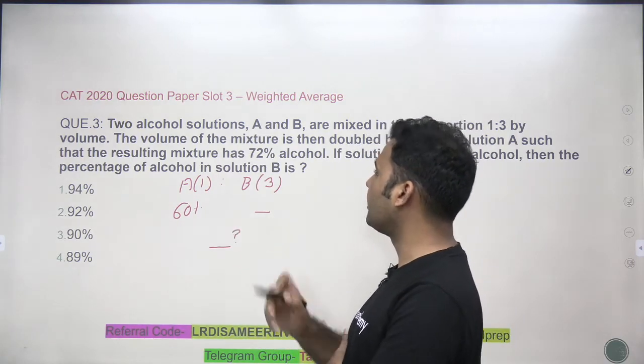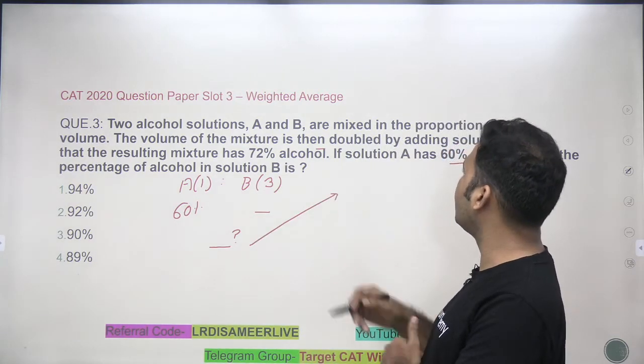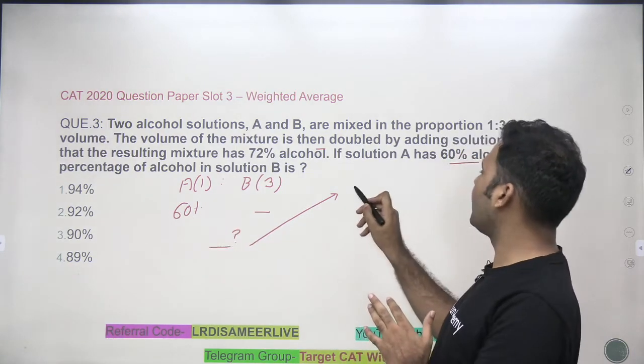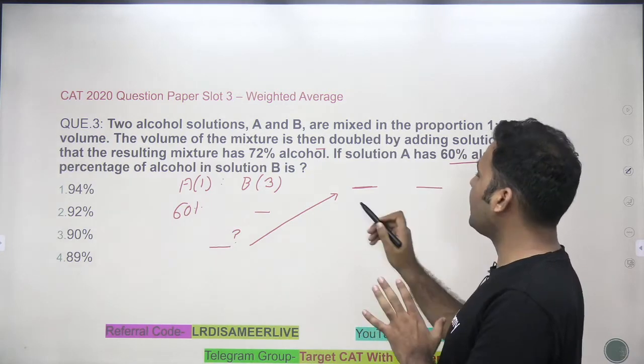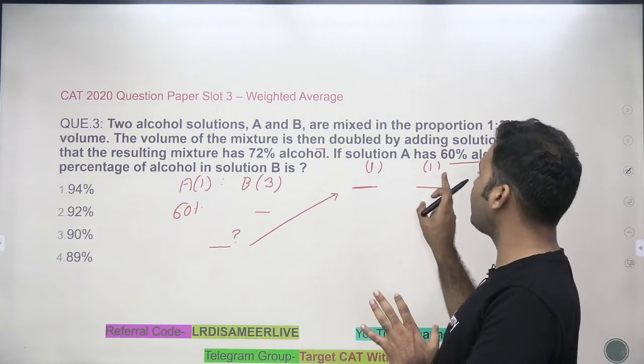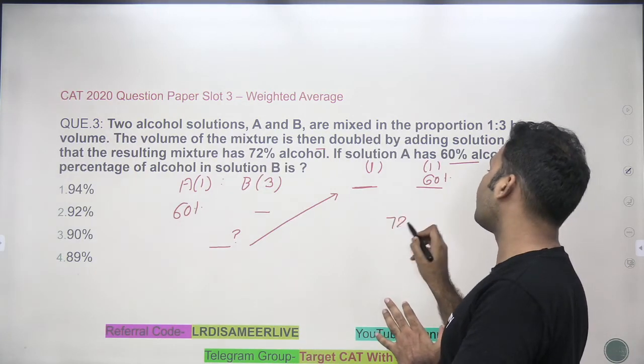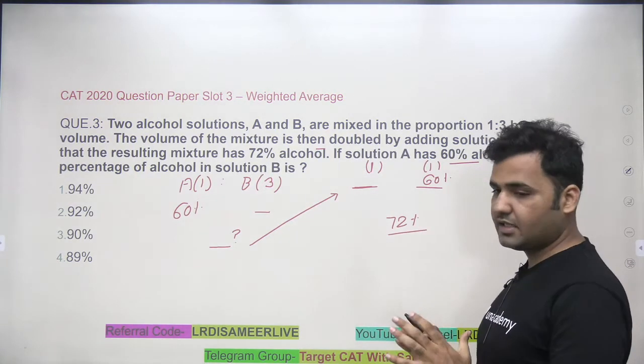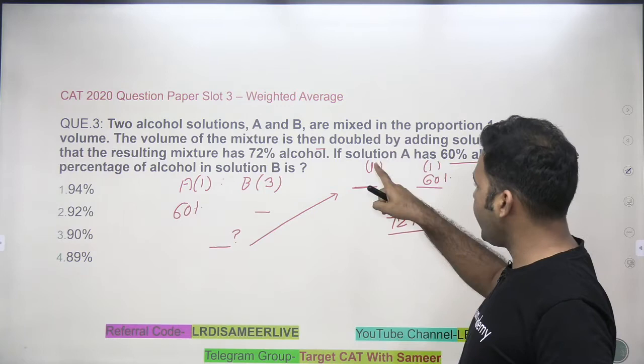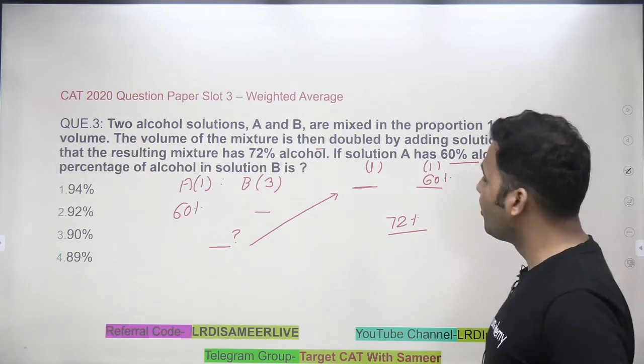You are taking 1 unit of A and you are mixing it with 3 units of B. We do not know what is the percentage of alcohol in B. After mixing this, there is a solution that is coming out. And this solution, we do not know what is this percentage of alcohol solution. We do not know what value is coming over here. Question says the volume of this mixture is then doubled by adding solution A such that the resulting mixture has 72% alcohol. So whatever percentage of alcohol that I have, I am doubling it. Doubling it means I am adding 1 unit to 1 unit. So if I am taking 1 unit of this solution, I am adding 1 unit of solution A which is 60% alcoholic, and finally the resultant is coming as 72% alcohol.